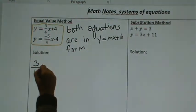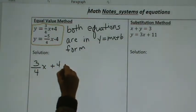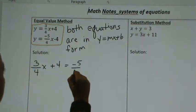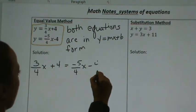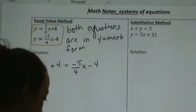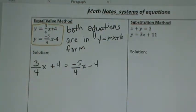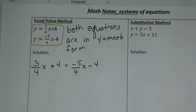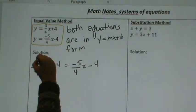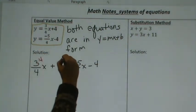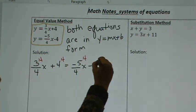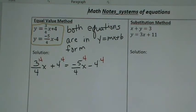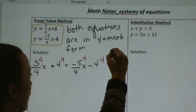Equal value means you're going to set both equations equal to each other. Now I'm going to write out each step that I'm doing. I don't like fractions, so I'm going to clear the fractions. Here's what you do when you clear fractions — it's based on the denominator of 4, so I'm going to multiply every term by 4. This is known as clearing the fractions.